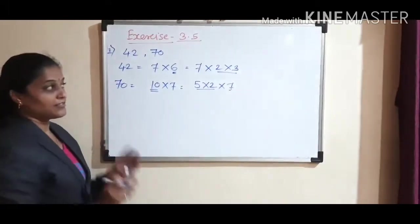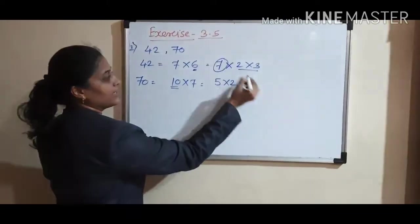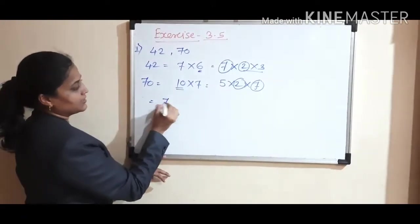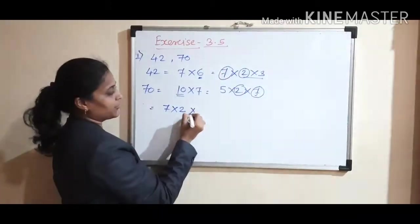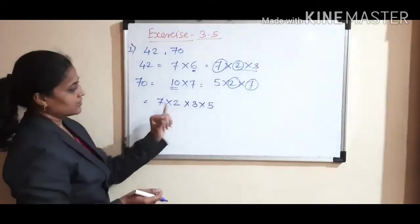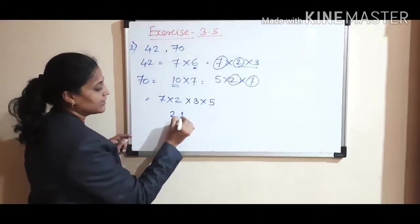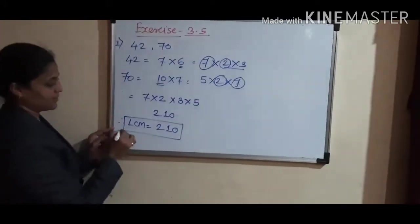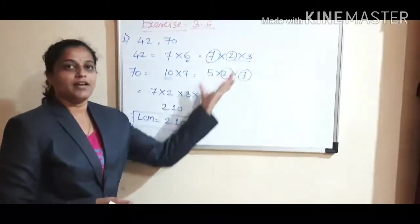In LCM, we want to find the common factors first. Which are common here? 7 and 2. We write 7 times 2 first. Then the remaining factors: 3 times 5. 5 times 3 is 15, 15 times 2 is 30, and 30 times 7 is 210. Therefore, LCM equals 210. We have to be careful about prime numbers. The prime number should be there at the last, and according to that we have solved.